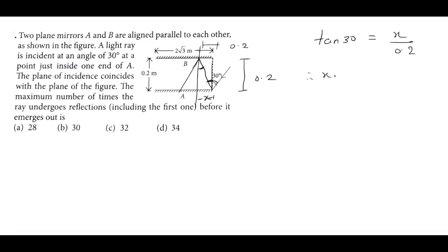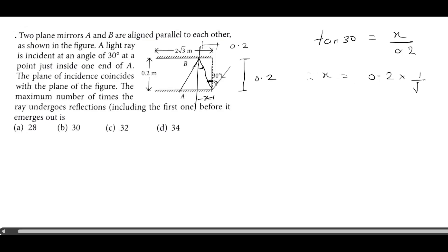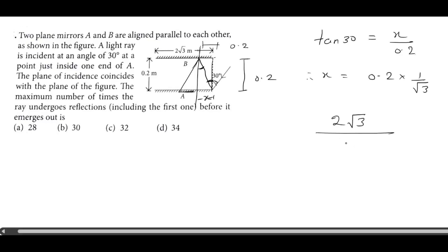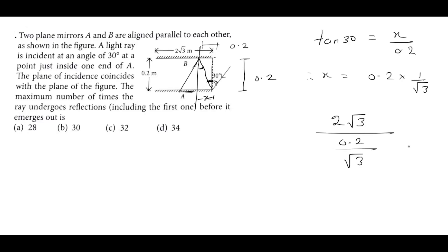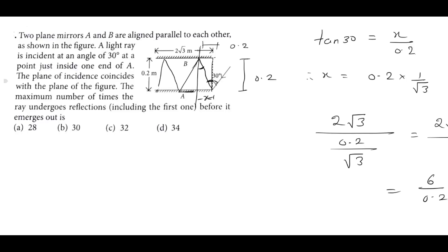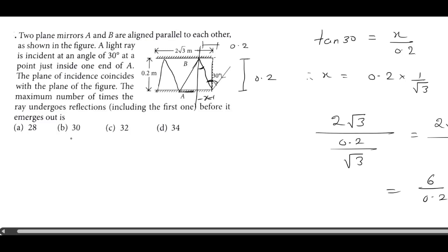Therefore, x equals 0.2 into tan(30°), which is 1 over root 3. This is the first reflection — same distance. This is the second reflection — same distance. So total length is 2√3. We divide 0.2 divided by root 3. So 2√3 times root 3 divided by 0.2 — root 3 times root 3 is 3, then 6 divided by 0.2 equals 30. So the answer is 30 reflections.